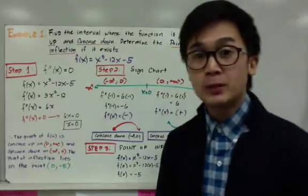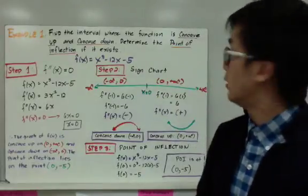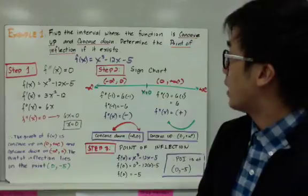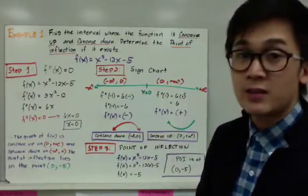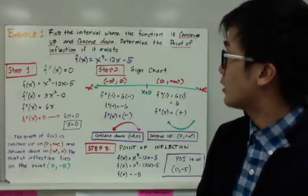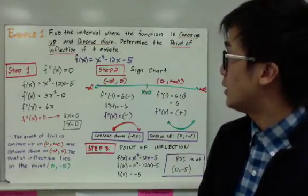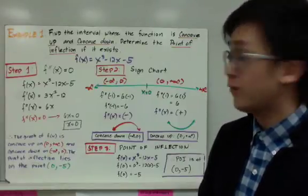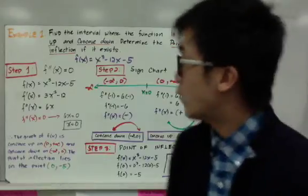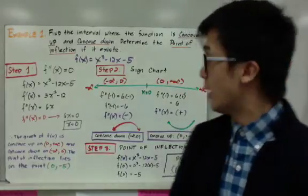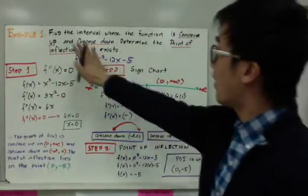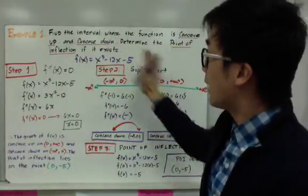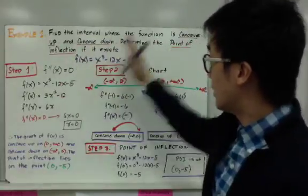On my first example, we need to find the interval where the function is concave up and concave down. We also need to determine if the point of inflection exists in this particular function. The function that we're using will be x cubed minus 12x minus 5.